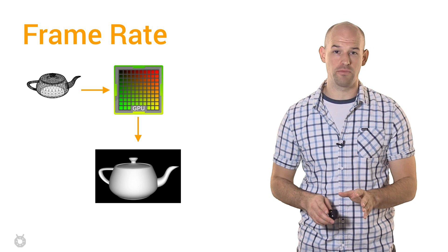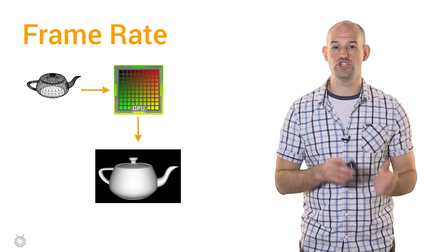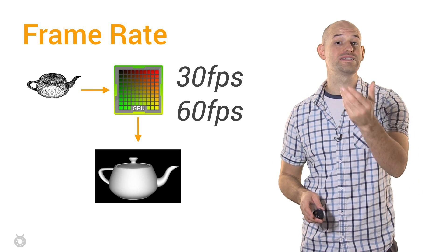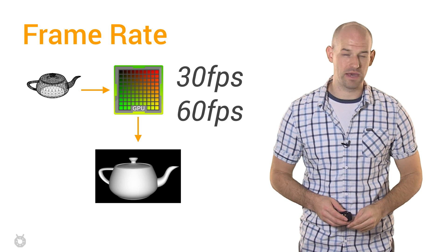The second term is frame rate, which measures how many times your GPU can draw a frame per second, for example, 30 frames per second or 60 frames per second. In this case, higher is always better.